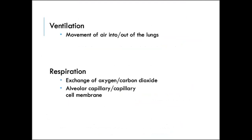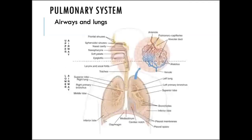Our two major processes that occur within the pulmonary system to oxygenate the blood are ventilation and respiration. Ventilation is the movement of air in and out of the lungs. Respiration is the exchange of oxygen with carbon dioxide, and it occurs at the capillary cell membrane level.